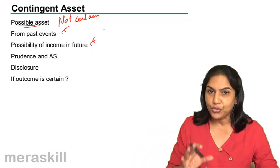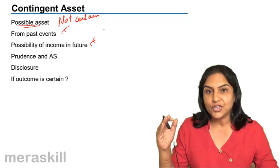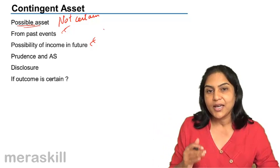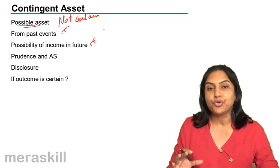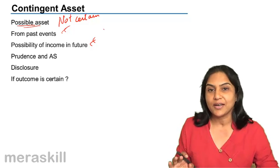So if we do win the case on the happening of a decision in favor of us, in that case there could be an asset. So such is a contingent asset.